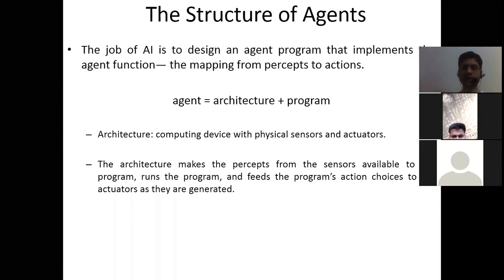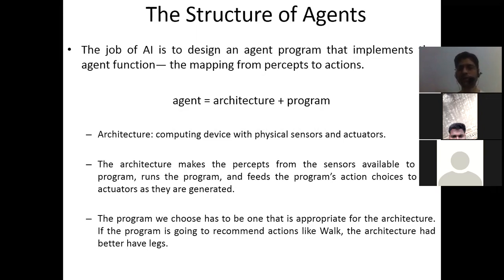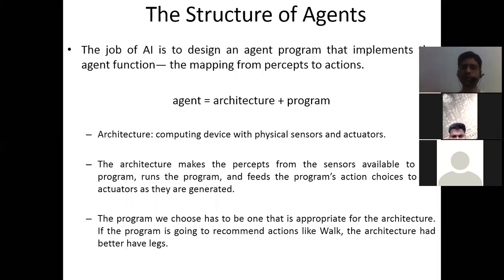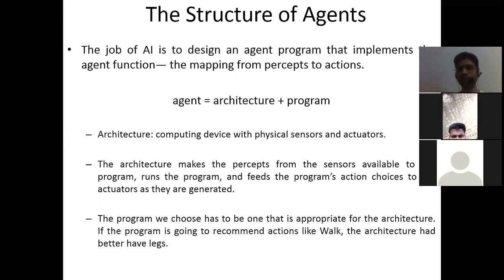Architecture is essentially your hardware — the building block on which you perform actions. The program chosen must be appropriate for the architecture. For example, if the program is going to recommend actions like 'walk,' the architecture had better have legs — so if you are programming a robot to walk, you must ensure your robot has legs; only then can it walk.